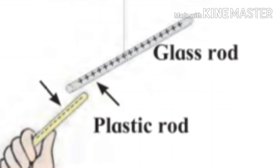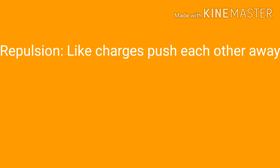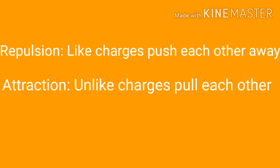Since unlike charges are present, we observe attraction. So: two rods carrying similar charges push each other away — this is called repulsion. And two rods carrying opposite types of charges get pulled towards each other — this is called attraction.